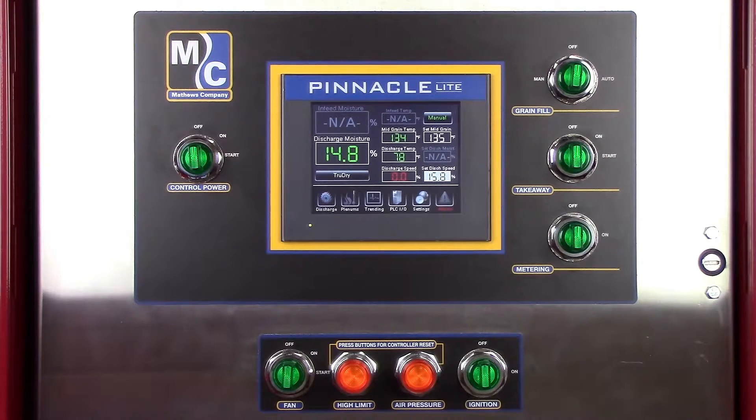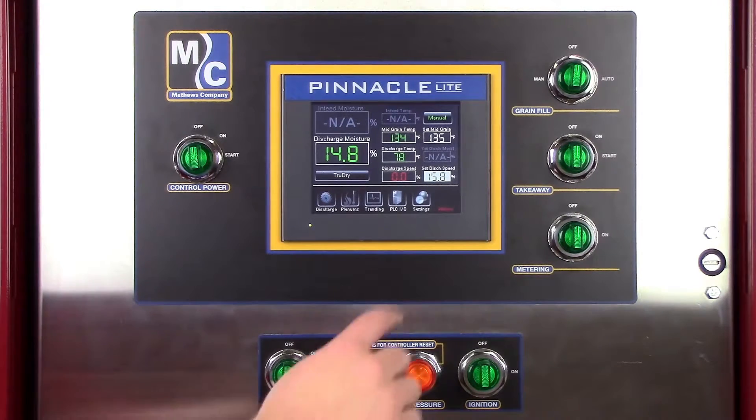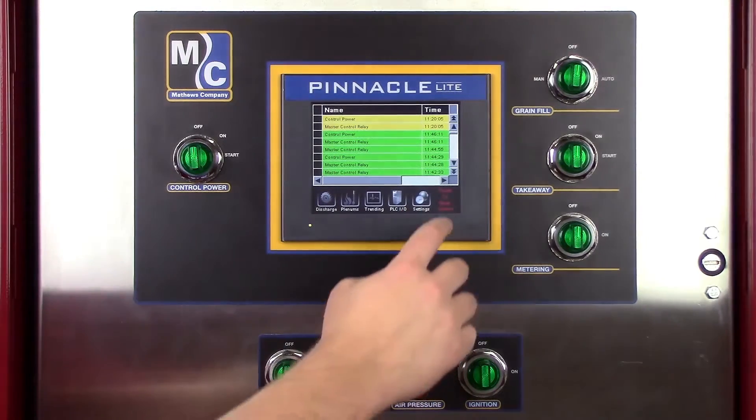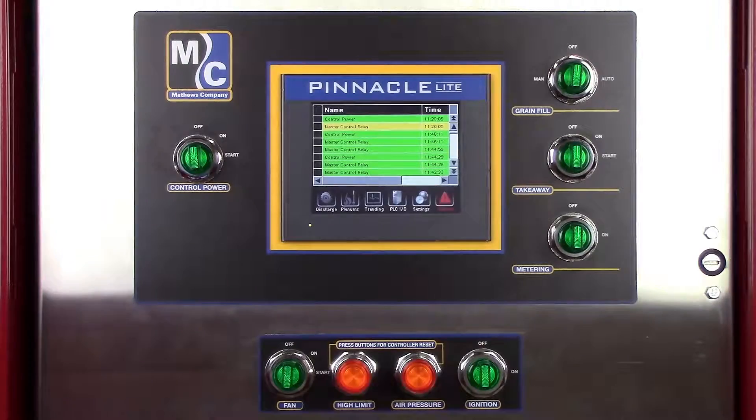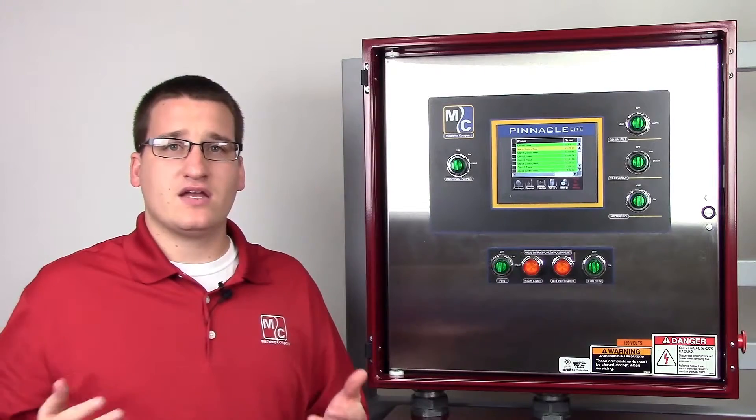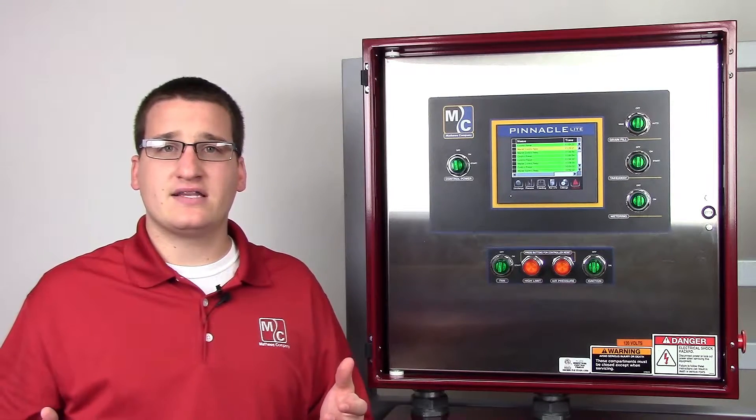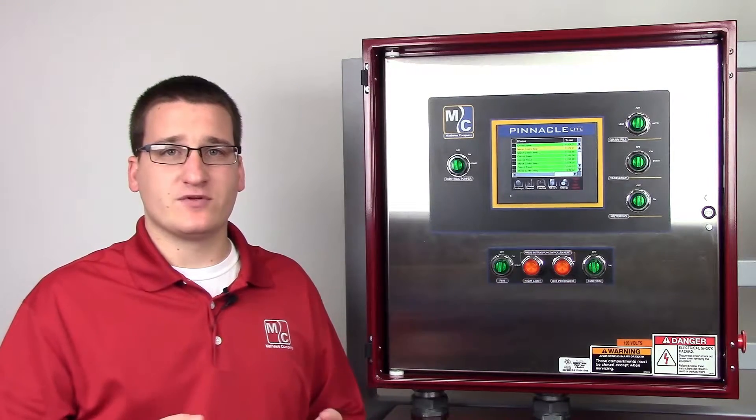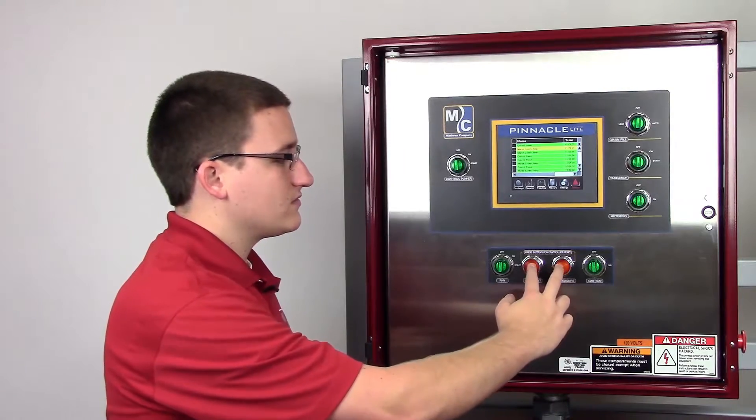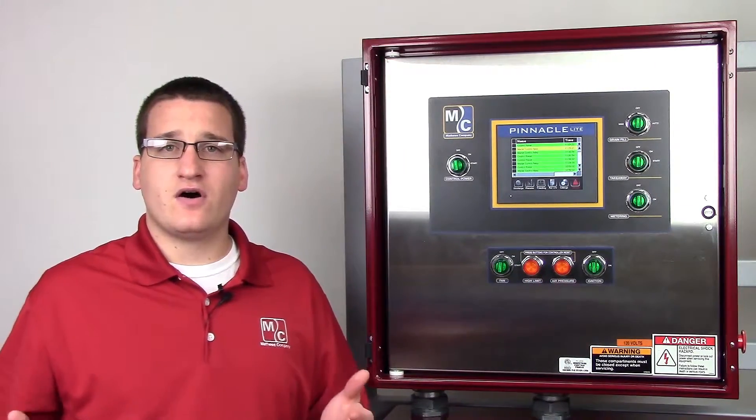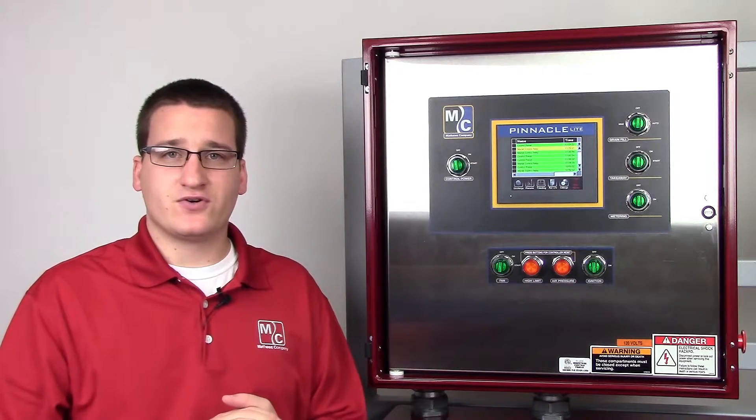The first step to starting the dryer is to clear any active alarms. You can do this by going to the alarms chapter and tapping the alarms button to clear active alarms. If the CAL controller is in an alarm state, you can reset it by pushing in the high limit and air pressure buttons simultaneously.